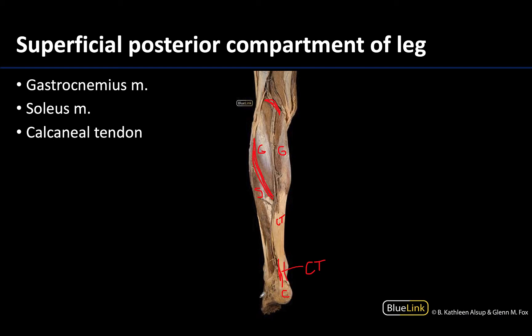Those are the superficial muscles of the posterior compartment of the leg. They tend to be a little bit easier to identify than the deep posterior compartment, so make sure you spend some time understanding the depth of these muscles — from there identification should be fairly easy. Thanks for your time here; I will see you at our last muscle station, station 26, next.